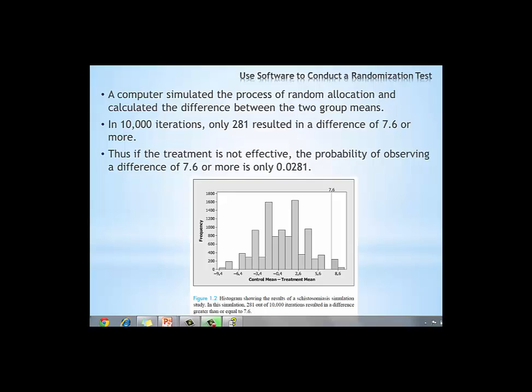Thus, we make the conclusion that the null hypothesis is not correct in favor of the alternative hypothesis. We conclude that the treatment made a difference in the number of worms that we observed in the livers of these female mice.